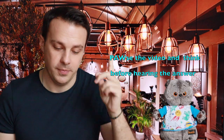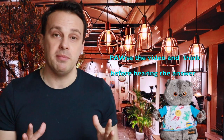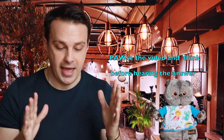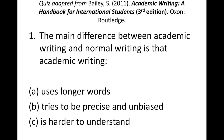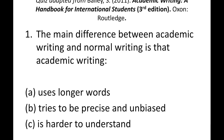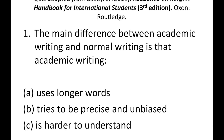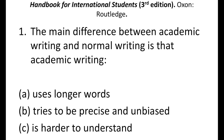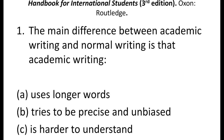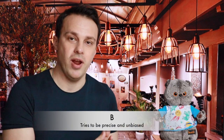The first question: the main difference between academic writing and normal writing is that academic writing — a, uses longer words; b, tries to be precise and unbiased; and c, is harder to understand. What is the right answer? If you guessed that the answer is b, you'll be correct.